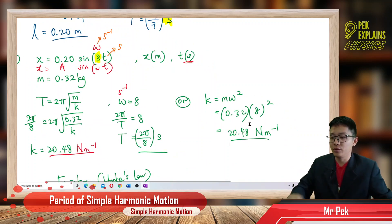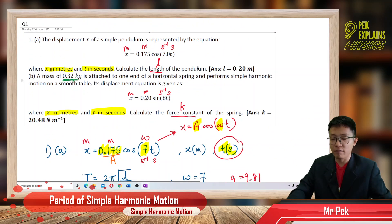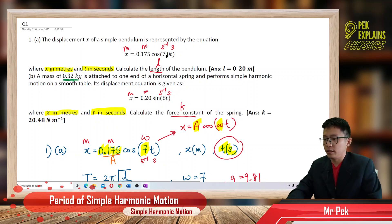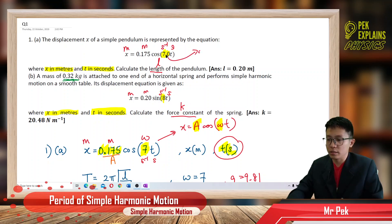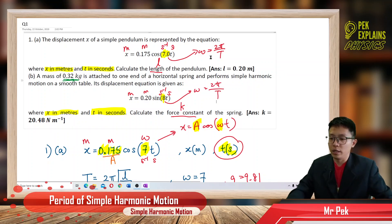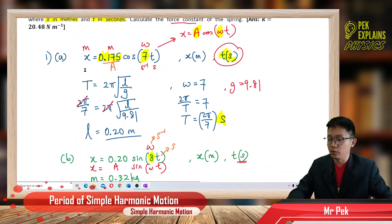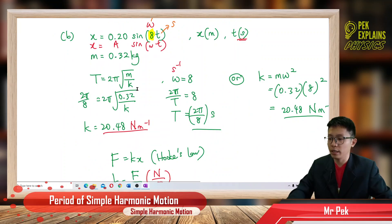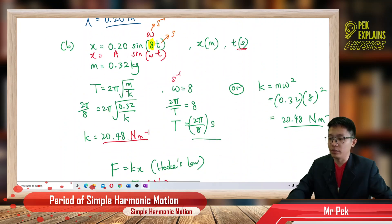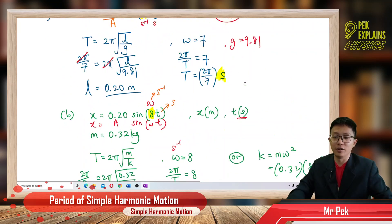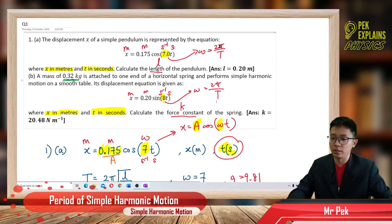So that's how we find the length of a pendulum and the force constant of a spring from a displacement equation. We just need the omega. From omega we get the period, and then use period = 2π√(L/g) for the pendulum or period = 2π√(m/k) for the spring. Omega = 2π/period applies to both. Stay tuned for the next videos, bye bye.